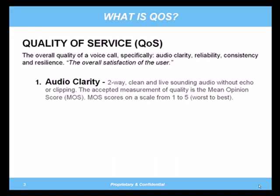First of all, audio clarity. Audio clarity is considered good if it is working in both directions, so both sides can hear, without audio clipping. This is measured by what is called a MOS score, or a mean opinion score, which is a mathematical score between one being the worst and five being the best. An average traditional analog call is typically a range from 4.1 to 4.6 on the MOS score, and a cell phone will range from 3.5 to 3.9.